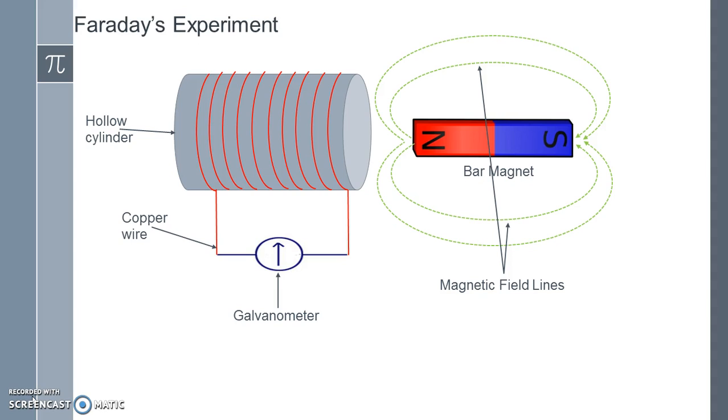He observed that the change in magnetic field produces deflection in the galvanometer. After this, he repeated the experiment by keeping the magnet stationary. He observed that the galvanometer does not show any deflection if the bar magnet is stationary. From this, Faraday concluded, which emerged as a law...